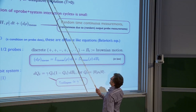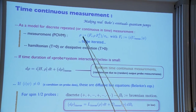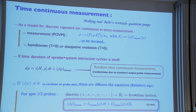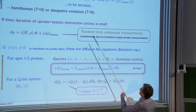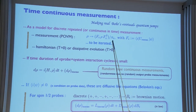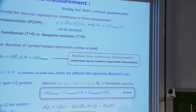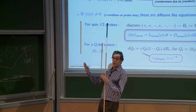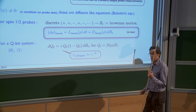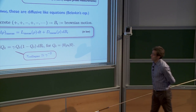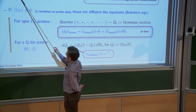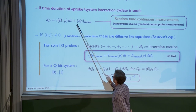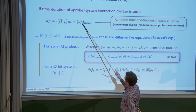In the time-continuous formulation, the density matrix evolves via two contributions: one from the Hamiltonian evolution (deterministic), and one from the measurement (random). Each measurement step updates the density matrix by conjugating it with operator f_i and normalizing by the probability of output i. Iterating these random measurements plus the evolution defines a stochastic process on density matrices. If the probes are spin-half, the outputs are a series of plus/minus values — in one-to-one correspondence with a random walk — whose continuous limit gives a Brownian motion.